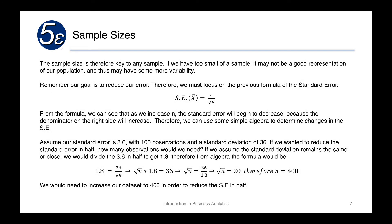Now, the sample size is key to any sample. If we have too small of a sample, it may not be a good representative of our population. And thus, it will introduce more variability. So remember, our goal is to reduce error. Therefore, we have to focus on the previous formula here, of the standard error of x bar equaling the sample standard deviation divided by the square root of N. From the formula, we can see that if we increase that denominator by increasing N, then the standard error will begin to decrease. And thus, we can use algebra to determine changes in the standard error.